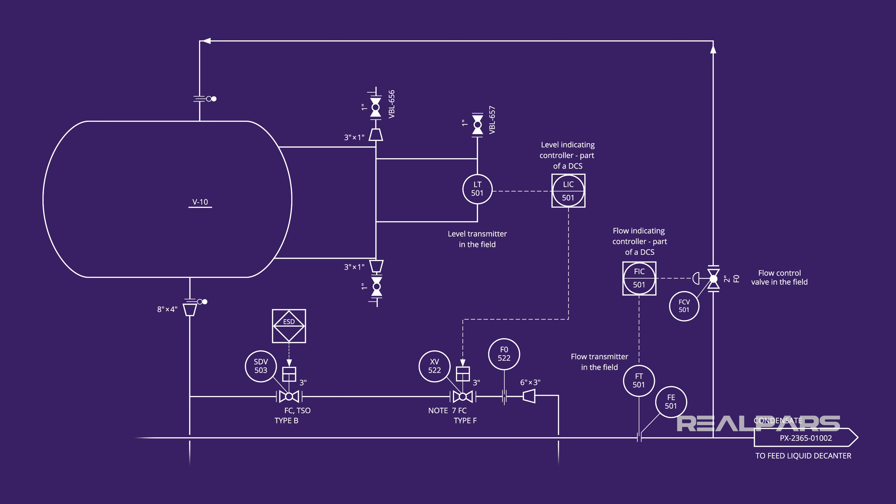A P&ID is like a roadmap telling us what the instruments and devices are, where they are located, and how they interact with the rest of the plant.